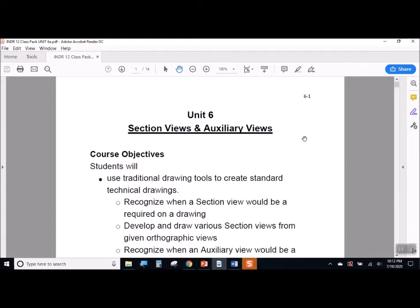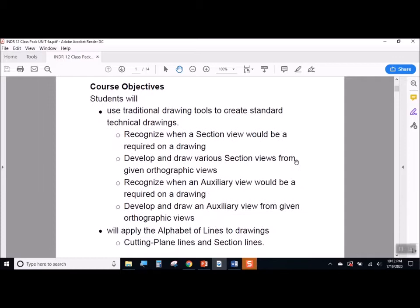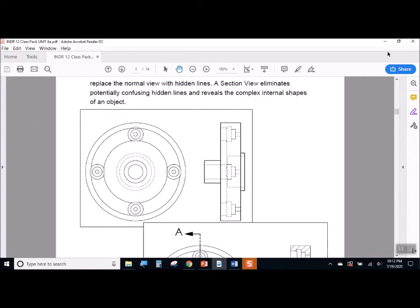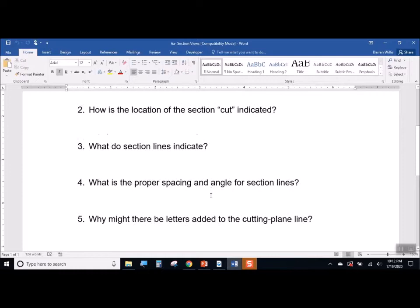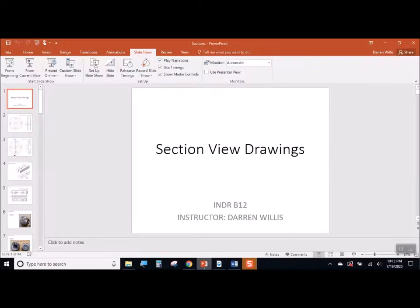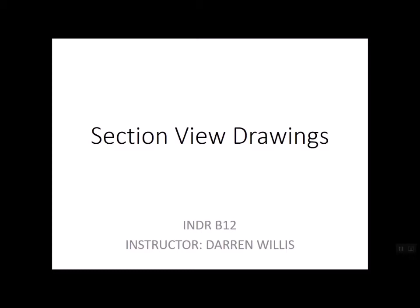So our next discussion will be on section view drawings. If you take a look at Unit 6 in your course pack, you'll see that is the first part of this unit. Section views are a specialty kind of view that's occasionally needed while working on technical drawings. Make sure that you've got the guided notes downloaded for the lecture so you're able to follow along and get all the high points.